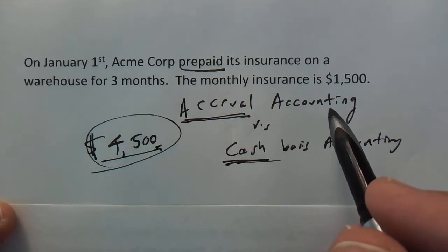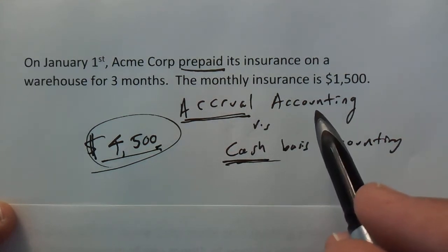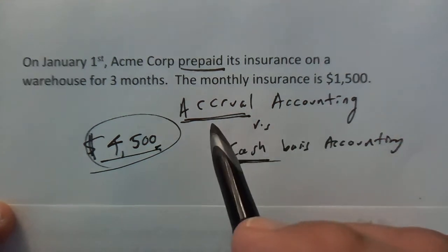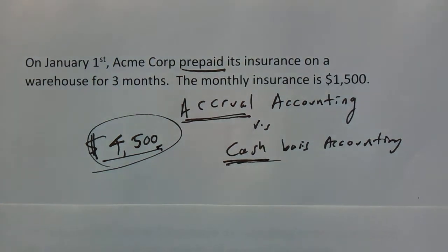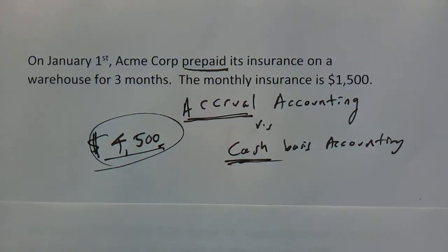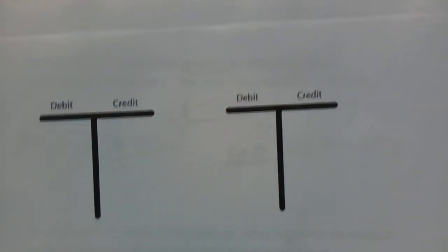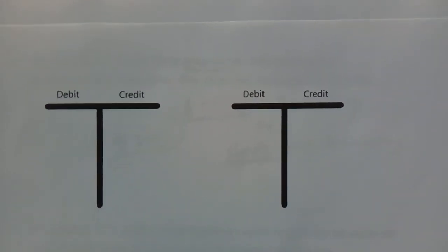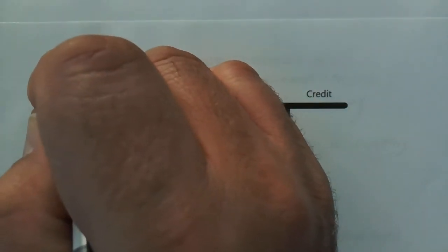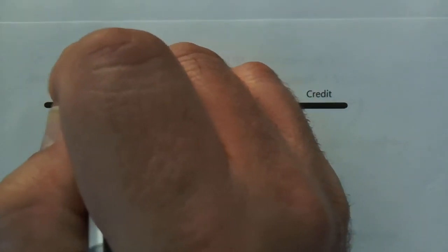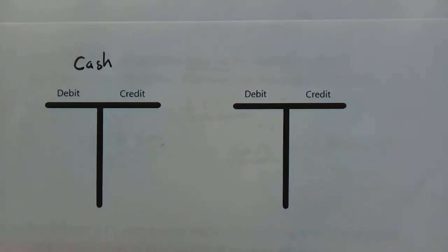So let's look at how we're going to account for this using some T-charts. Let's start out with the first one, which is the most obvious — cash, our cash account.